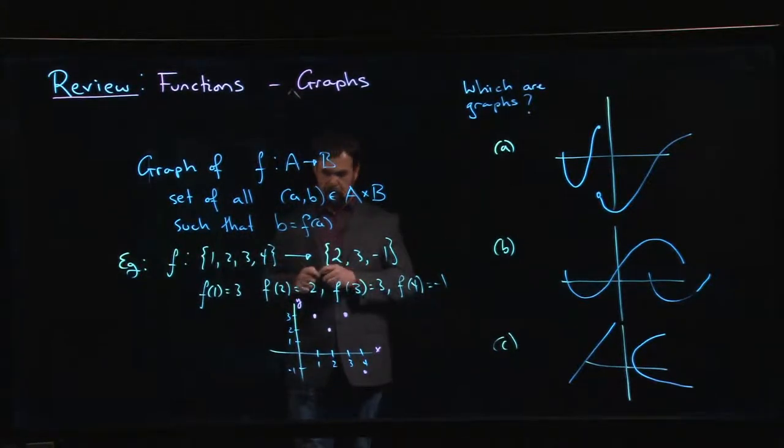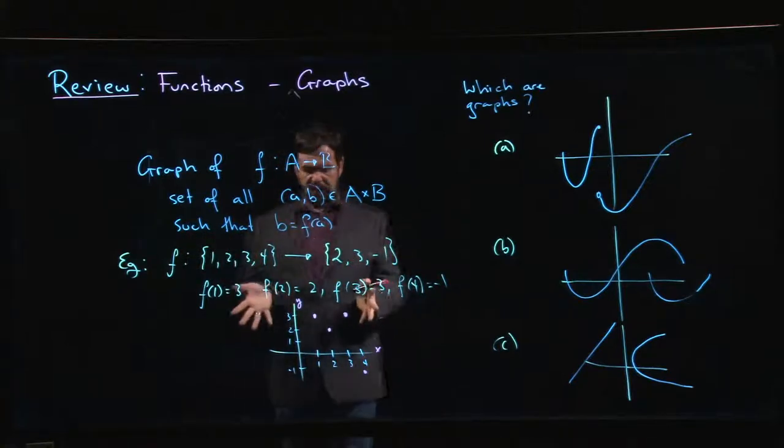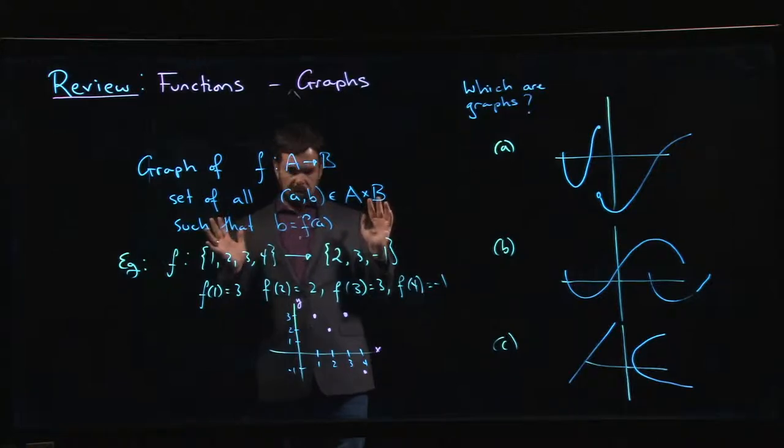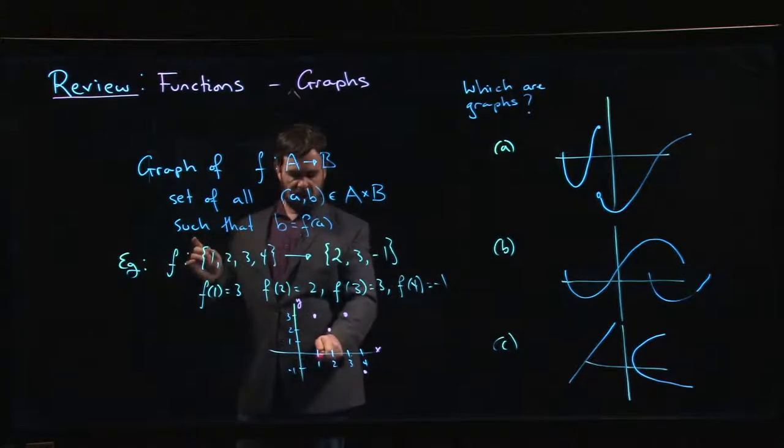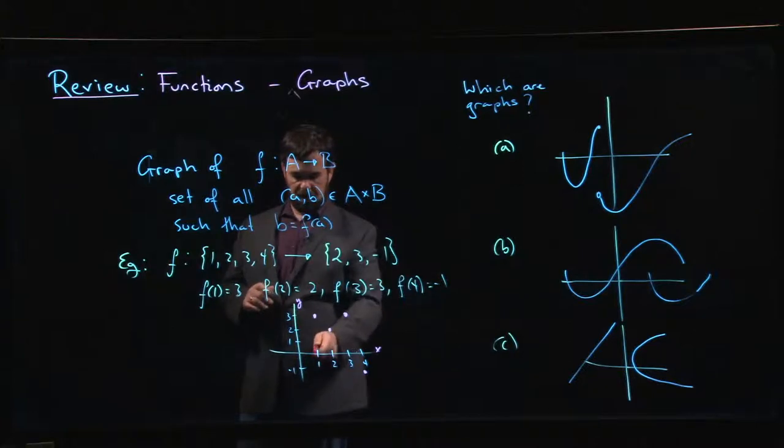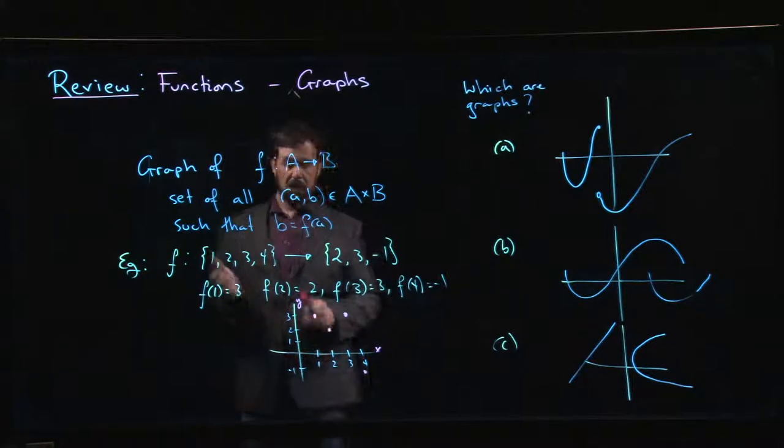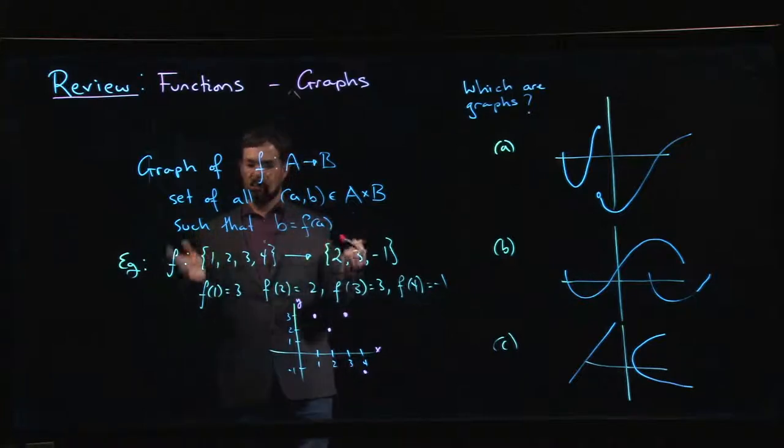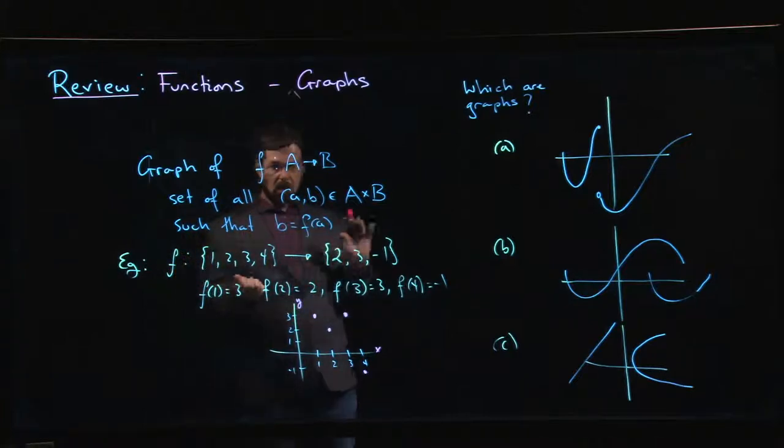The way I would know that this was not a function is if there was more than one y-value for one of these x-values. So if I plot another point, say here—that may be (1, 1) or (1, -1) down here or (1, 2)—I would no longer have a function. Again, it's okay to have two x-values that both go to the same y-value. I just can't have two y-values associated to a single x-value. So that's a function.